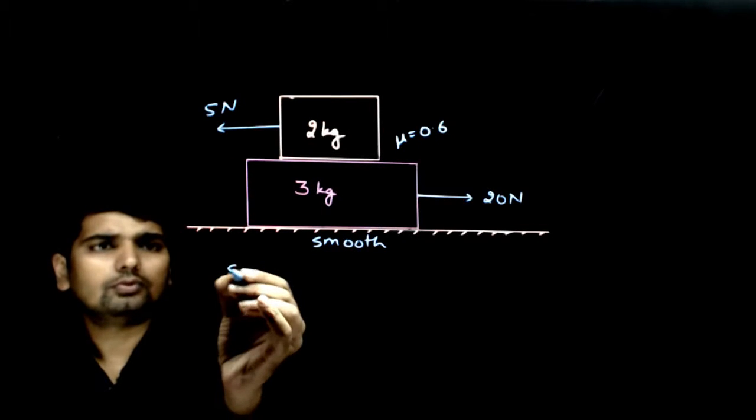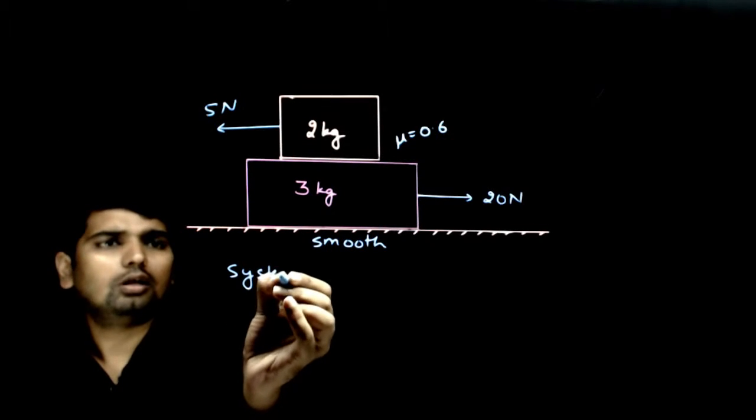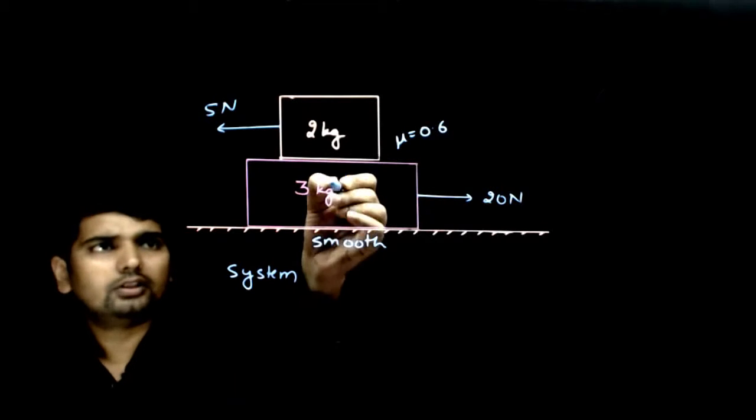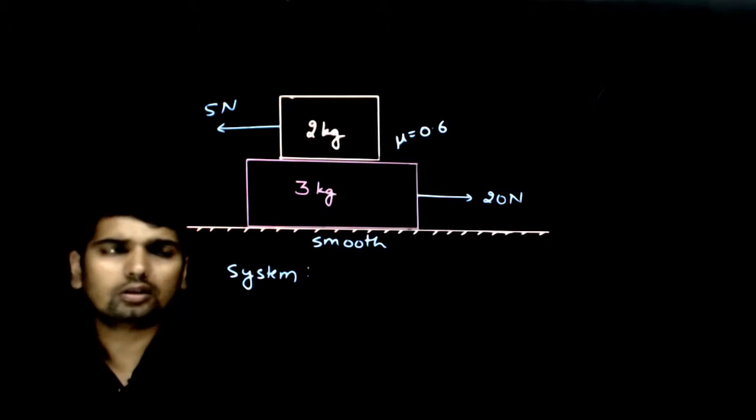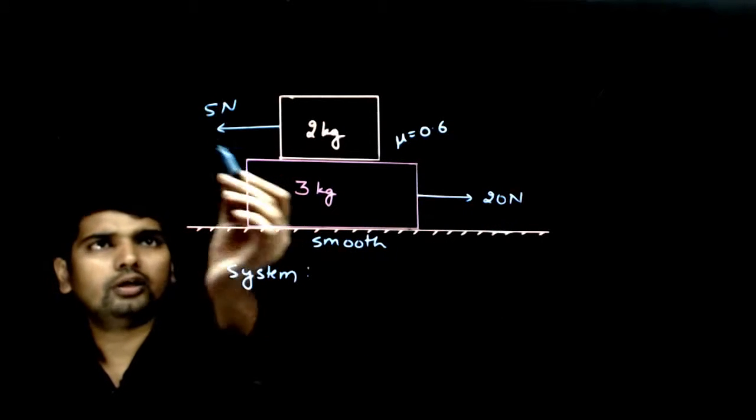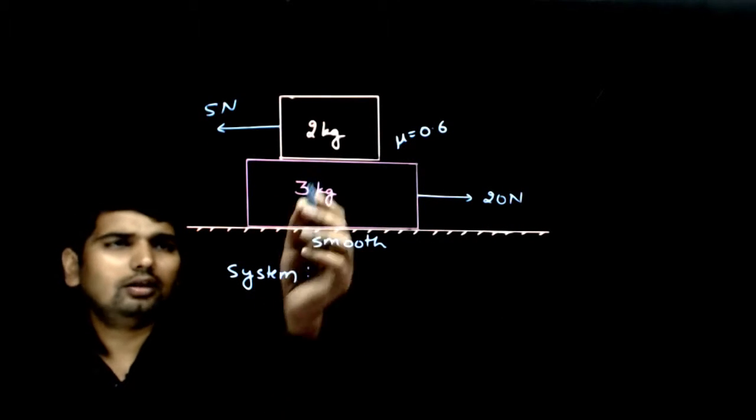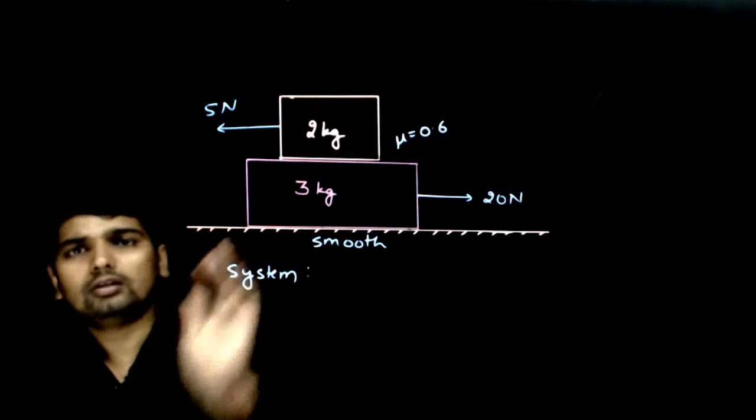If I consider the whole system, the friction between two blocks is internal force, and there is no external force other than 20 N and 5 N. There is Mg, but that Mg will be balanced by normal force.